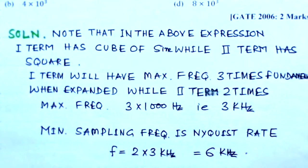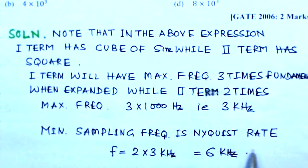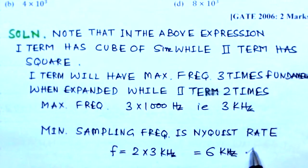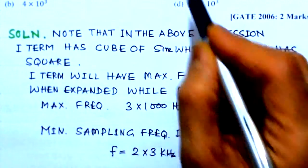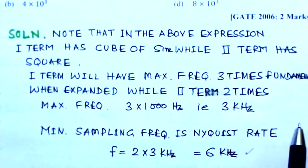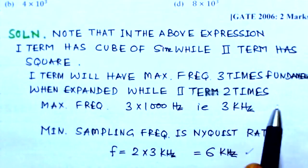Then the minimum sampling rate or sampling frequency is the Nyquist rate, and it is 2 × 3 kilohertz, that's 6 kilohertz. So this is in option (c), so option (c) is the right choice here.